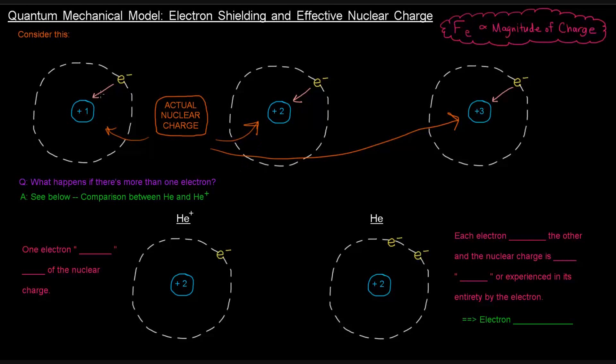Now, you'll notice they're all pulling on just one electron. That's an important idea, because what happens if there's more than one electron?